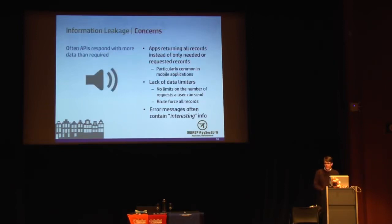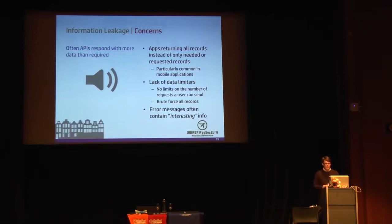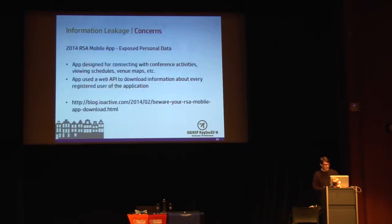The next vulnerability I commonly see in APIs is information leakage. This is extremely common in mobile back-ends where APIs respond with more data than was requested — returning all records from the database instead of just the one user that was requested. We also see a lack of data limiters where a user can request as much data as they want. And we commonly see information leakage in error messages that reveal interesting technical information about the backend.